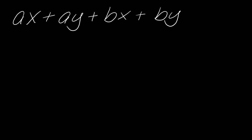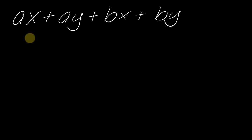So this right here is the classic basic grouping example. I want to take a second just to inspect this. I've got ax plus ay plus bx plus by. Take a moment to notice that there is no greatest common factor in this polynomial — no term they all have in common. But notice these two terms both have an 'a' in common and these two terms both have a 'b' in common. When you notice that, it's usually what's going to kick off that you're probably using grouping. Also the fact that we have four terms — four terms and grouping can very often go hand in hand.